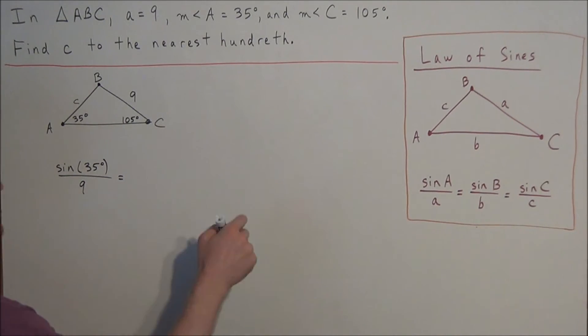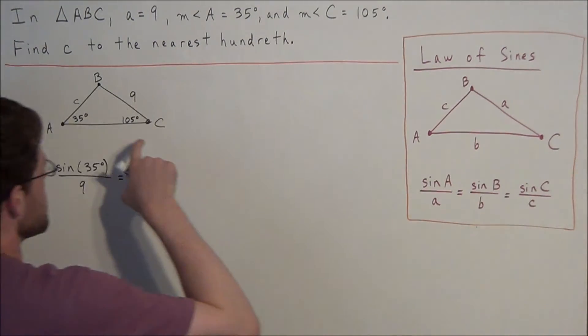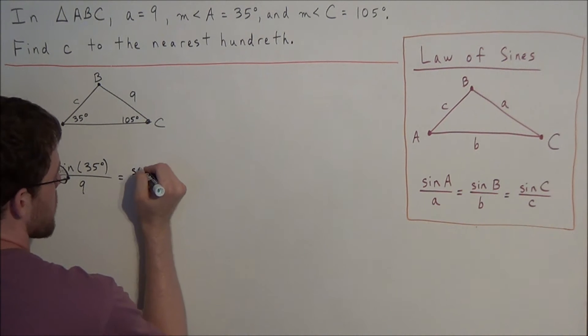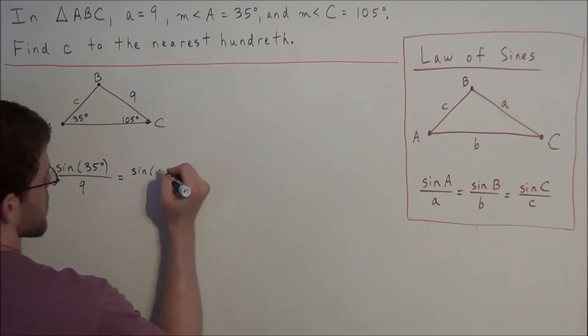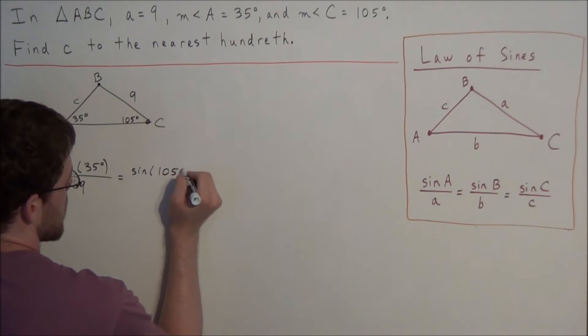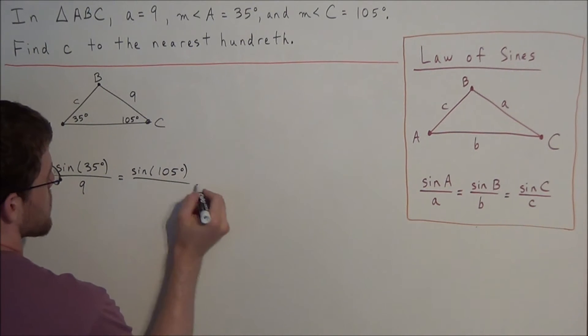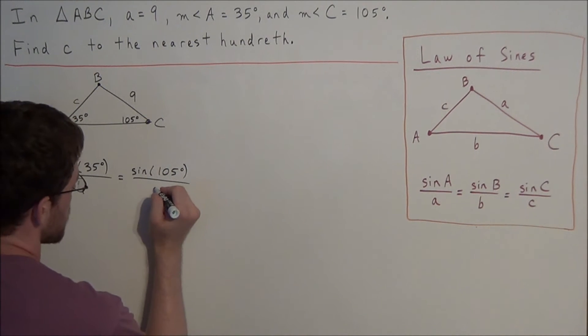And we can set this equal to the ratio of sine of angle C. So you have the sine of, the measure of angle C is 105 degrees, so we can call this 105 degrees, divided by the length of side c, which we don't know.